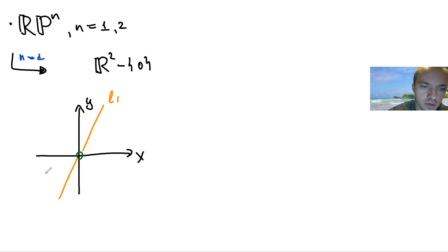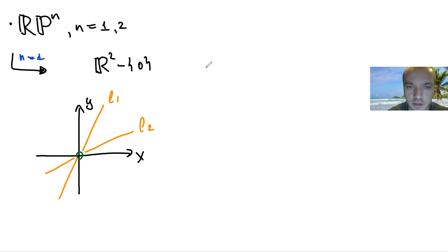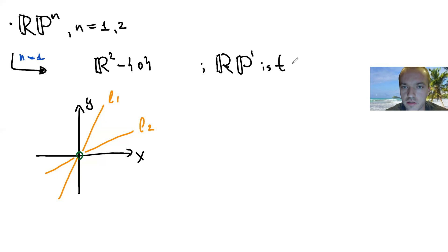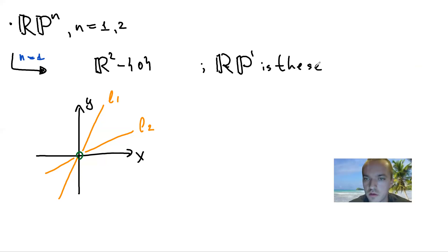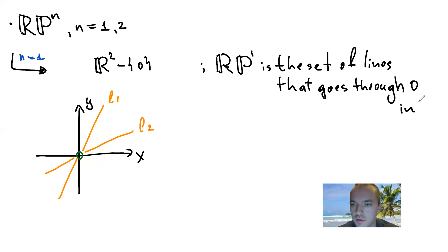I can give you two constructive definitions and then show how one is related to the other. The first definition: RP¹ is the set of lines that pass through the origin in R².